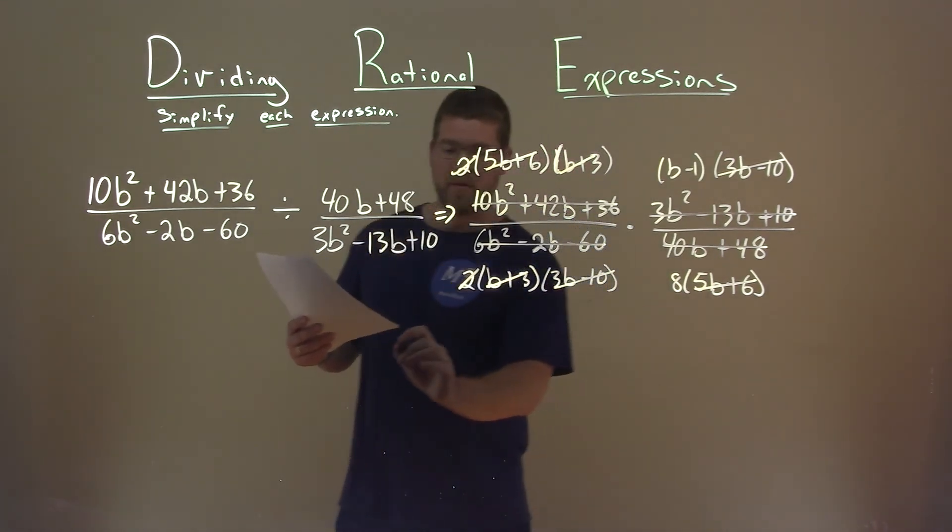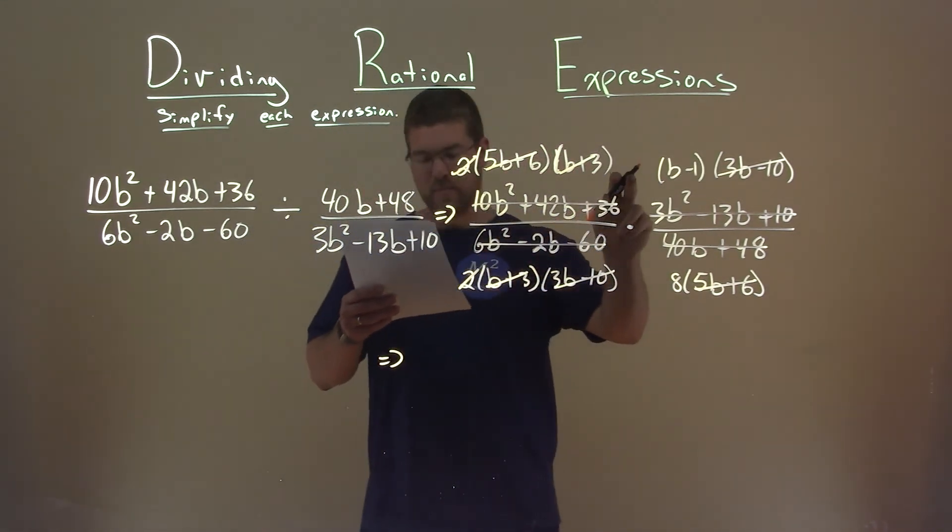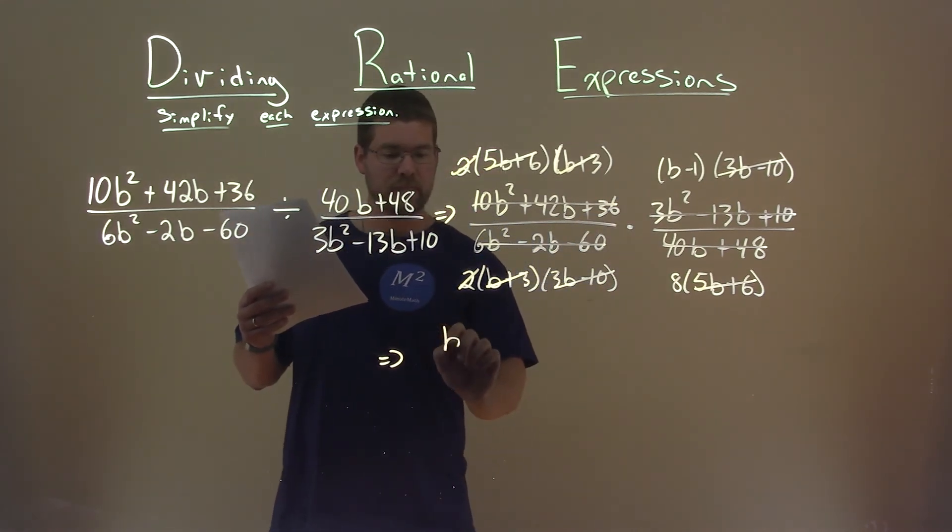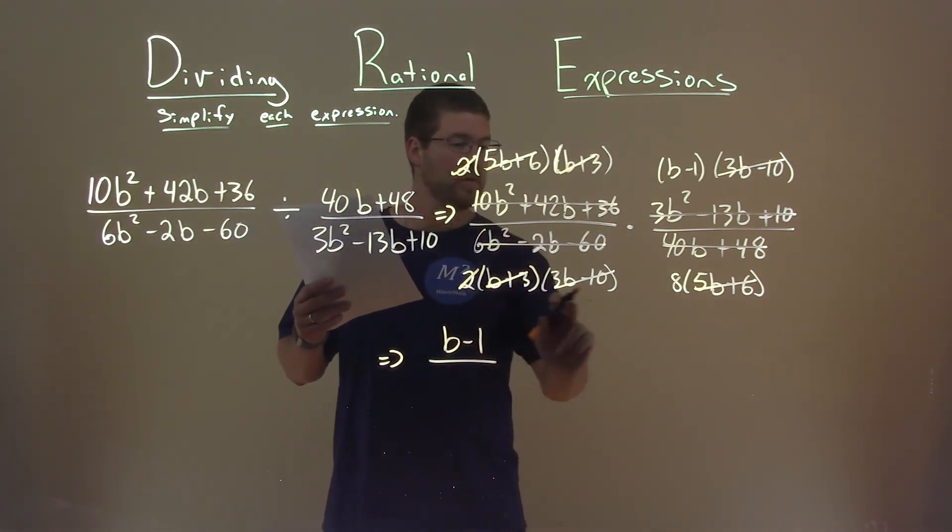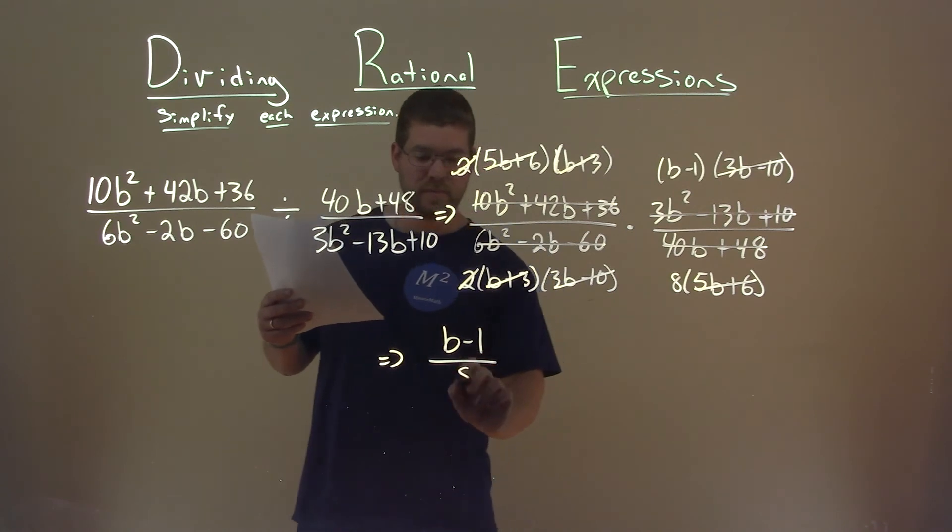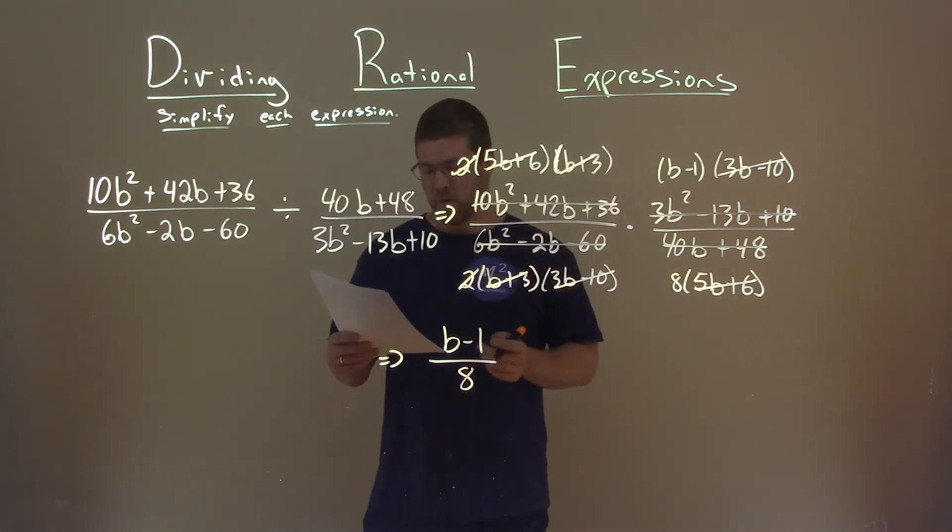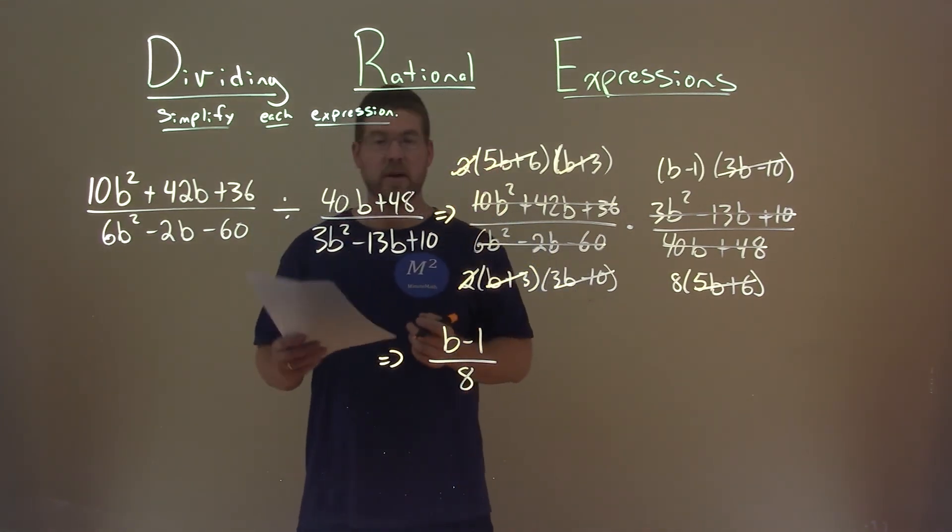What's been left over? Well, in the numerator, we just have b minus 1 left over. In the denominator, we just have the 8. So b minus 1 over 8 is our final answer.